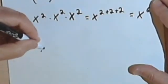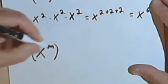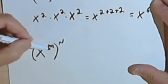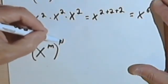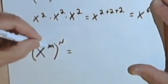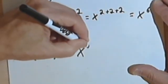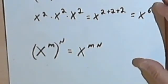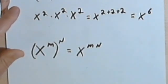So our general rule for raising a number to a higher power is to take the exponent of the number and the power we're raising it to, and multiply those two together. That gives our answer: x to the m, raised to the nth power, equals x to the m times n. That's all for this video — I'll continue in a second one.